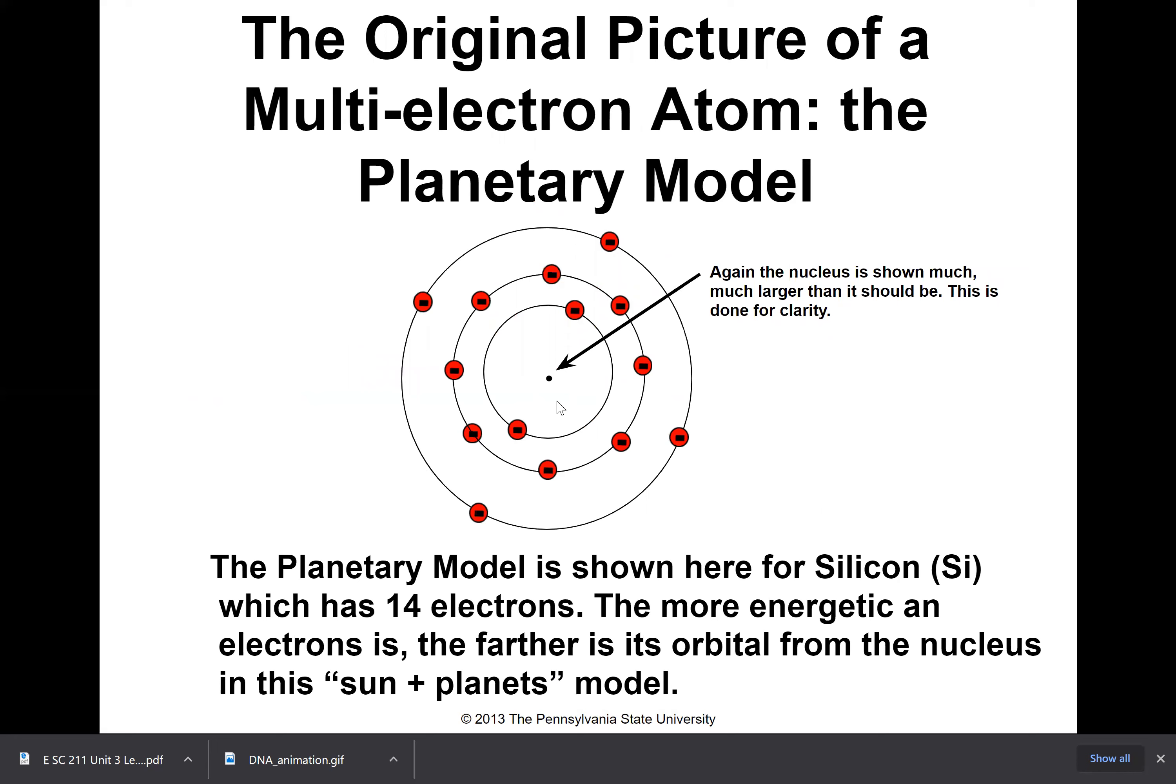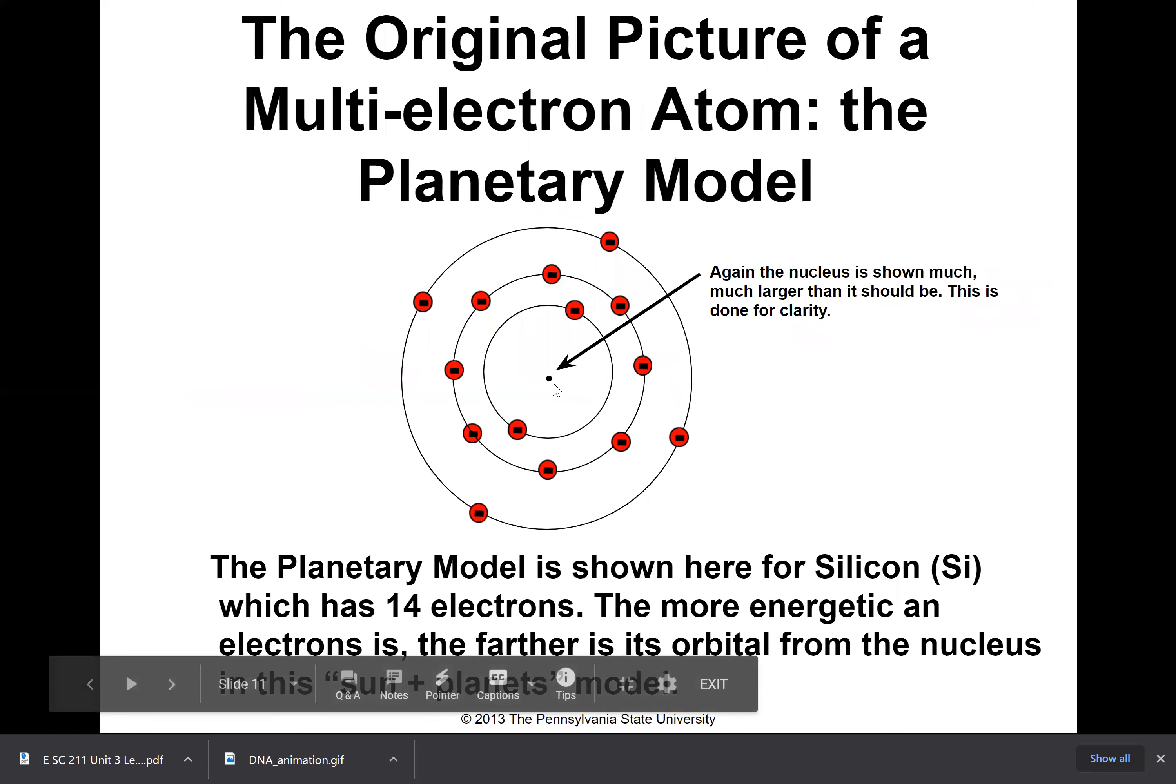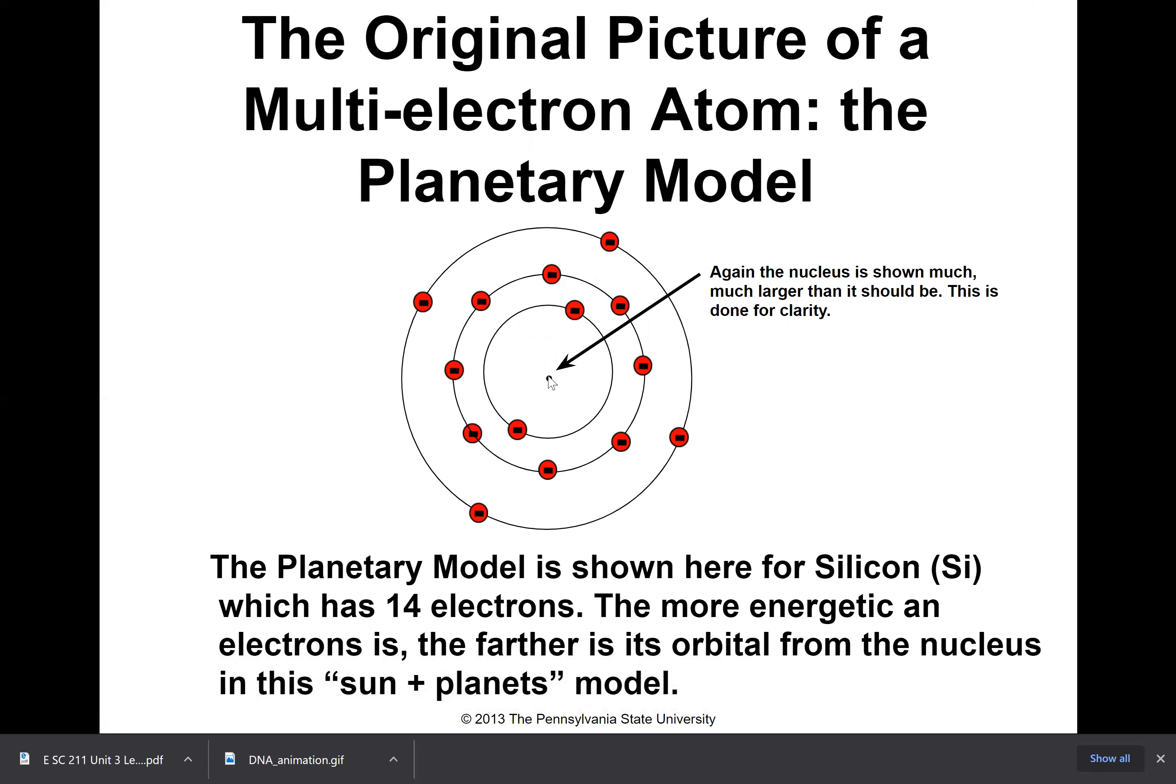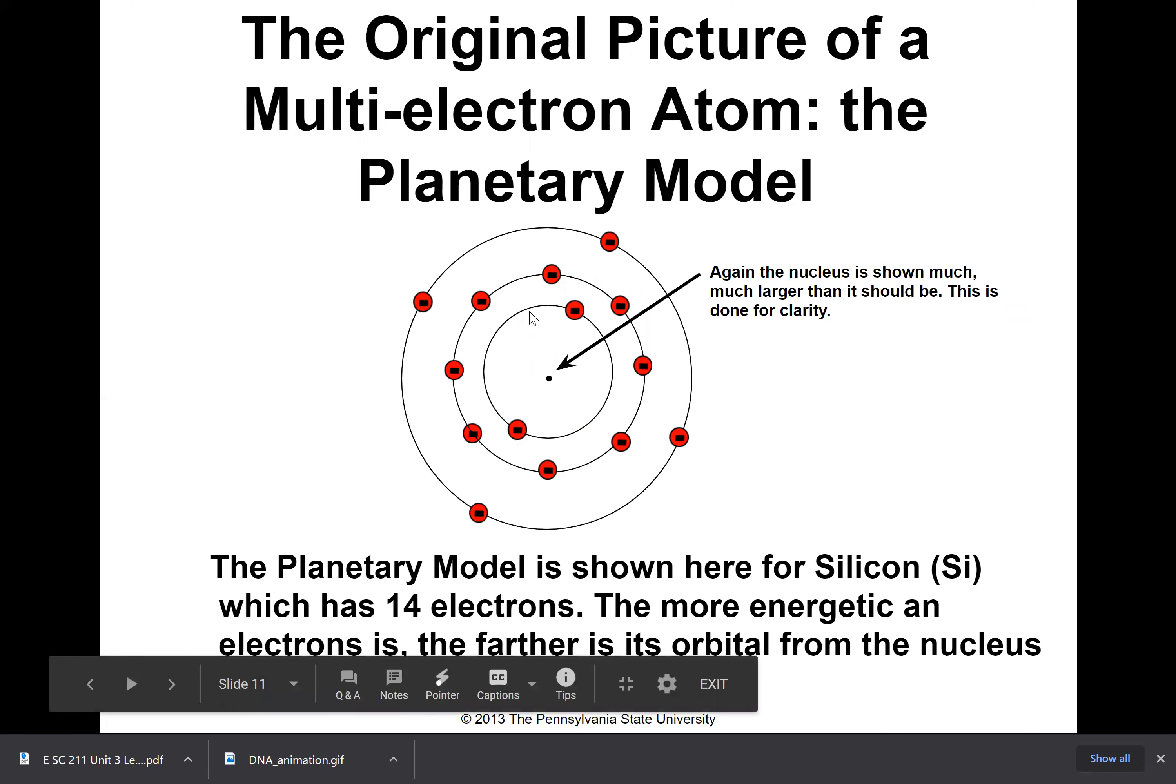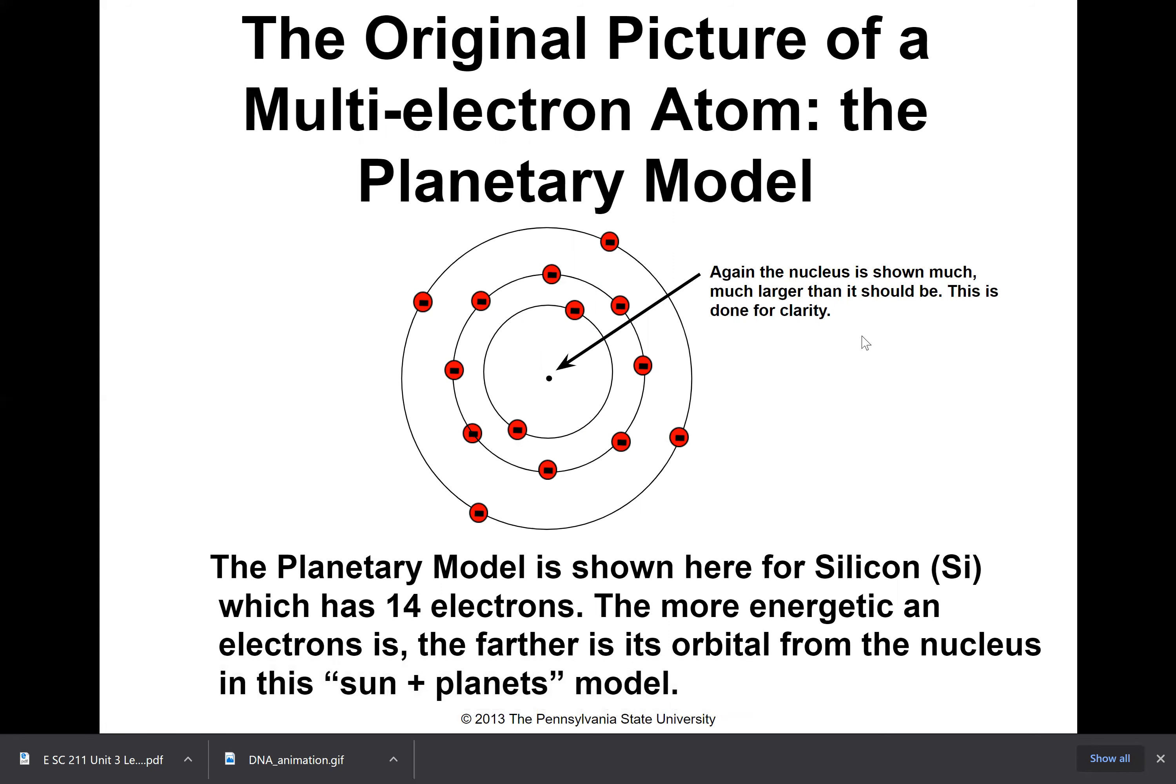For a multi-electron atom, they're using silicon as an example here. Again you have the nucleus much larger than in real life, and you have the different energy levels of the orbitals out here all in circles around the nucleus. The more energetic an electron is, the farther its orbital is from the nucleus. So these guys out here have a higher energy level than the inner circles there.